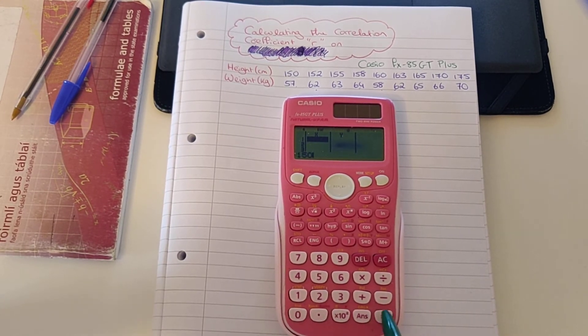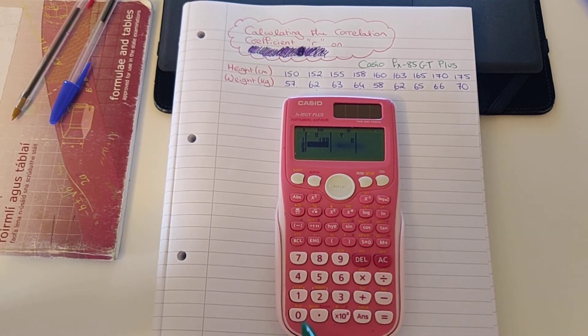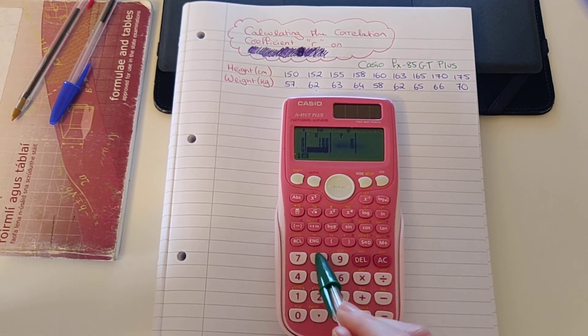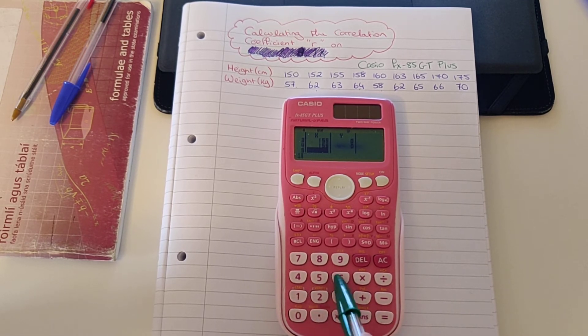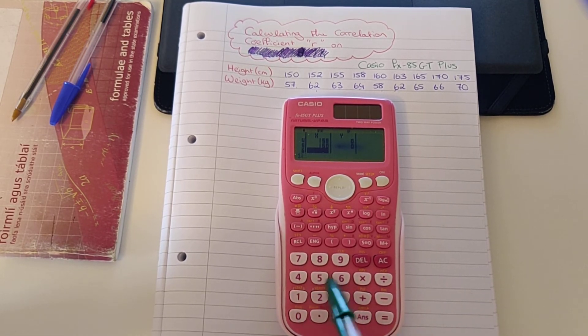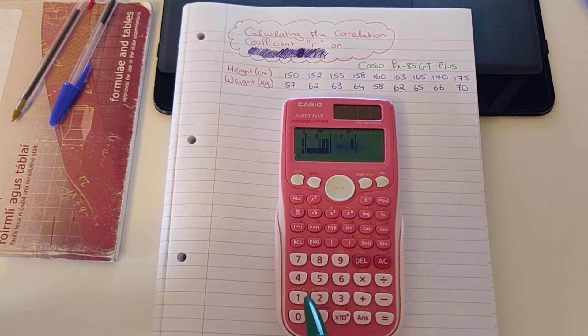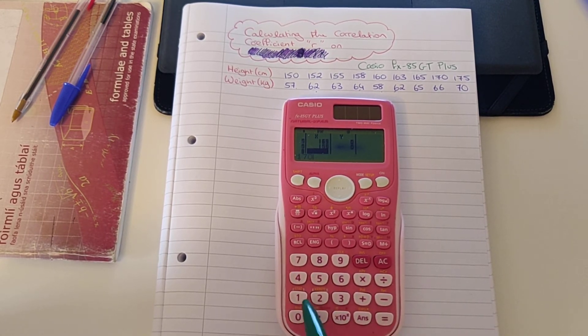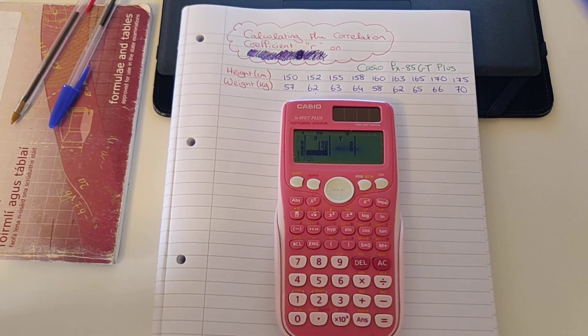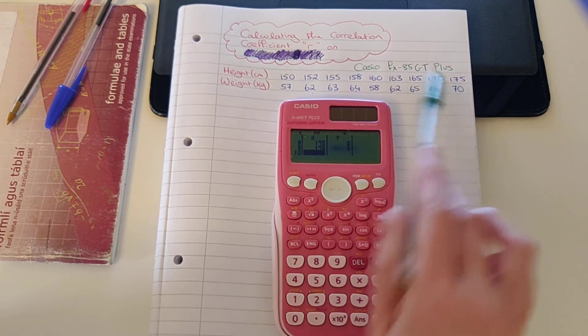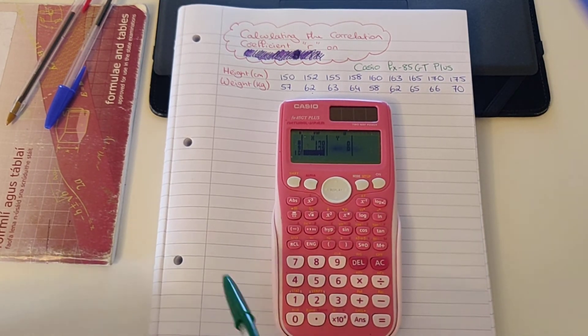So we have 150 and then we press equals to move down the column. 152 equals, 155 equals, 158 equals, 160 equals, 163 equals, 165 equals, 170 equals, and 175 equals. And now I can see I have 9 pieces of data, so I'm happy because that matches the 9 pieces of data that I have in my table.